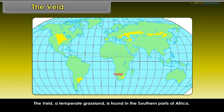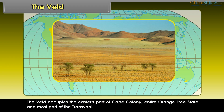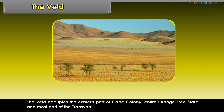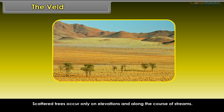The Veld, a temperate grassland, is found in the southern parts of Africa. Velds are rolling plateaus with varying heights ranging from 600 meters to 1100 meters. The Veld occupies the eastern part of Cape Colony, the entire Orange Free State, and most of the Transvaal. The Veld lands are sandwiched between the Drakensberg Mountains on the southeast and the Kalahari Desert on the northwest. Scattered trees occur only on elevations and along the course of streams.